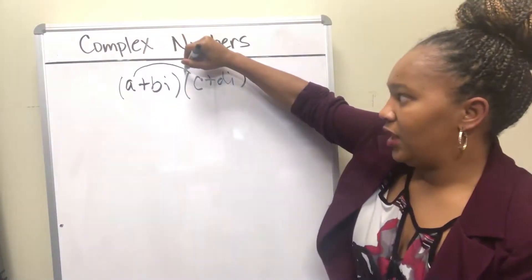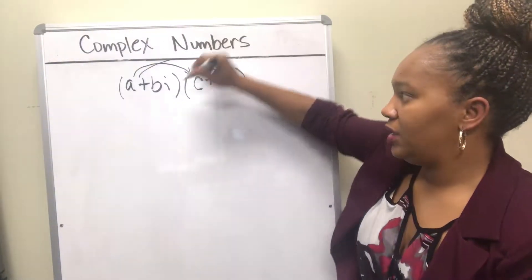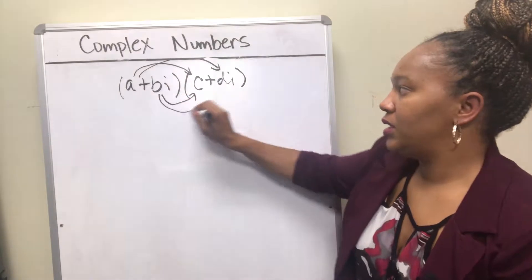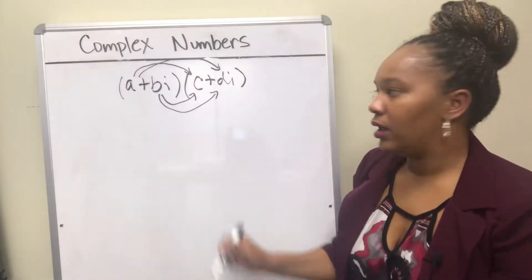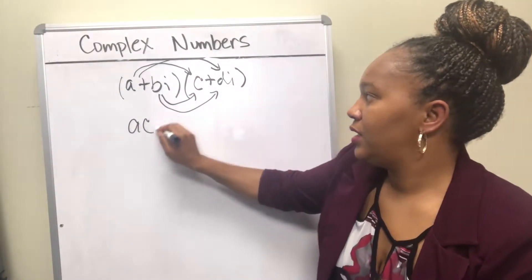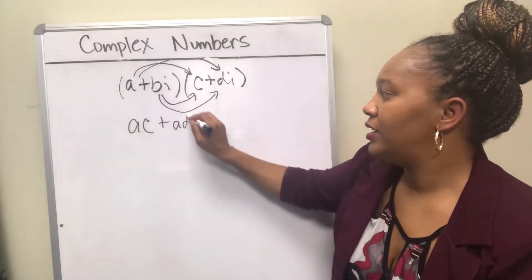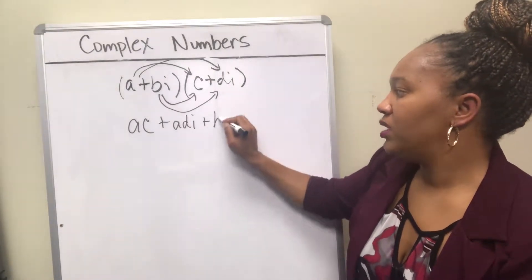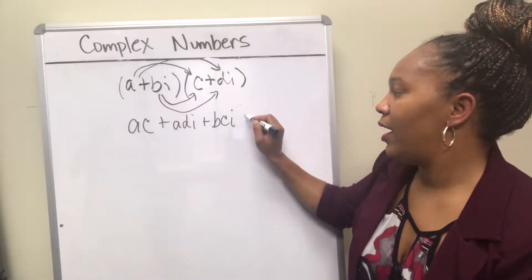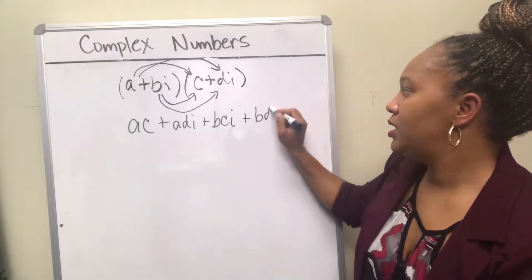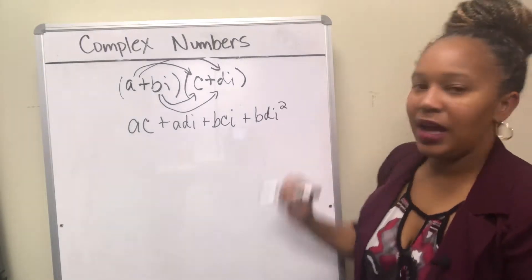So we're going to do A times C, A times D times i, B times i times C, and B times i times D times i. So you get AC plus ADi plus BCi plus BD, and i times i is i squared.